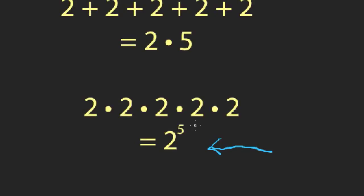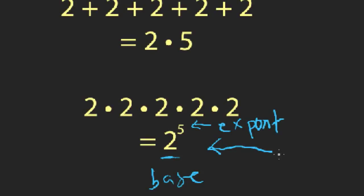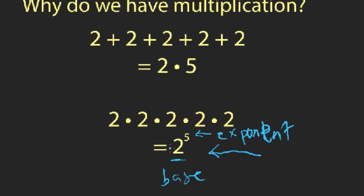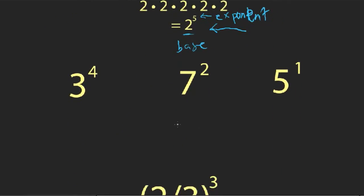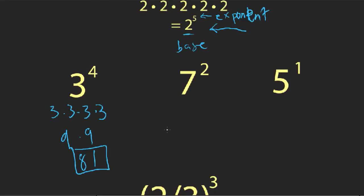What I have here is an exponential expression. The two, or the big number, is called the base, and the five, or the little number, is called the exponent. You say this as 'two to the fifth power.' The exponent tells you how many times to multiply the base with itself. For example, three to the fourth power is three times three times three times three, which equals nine times nine, or eighty-one.